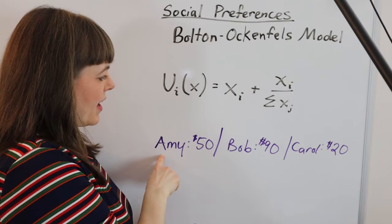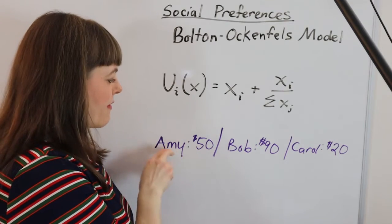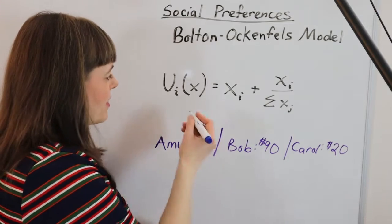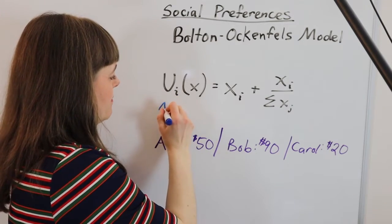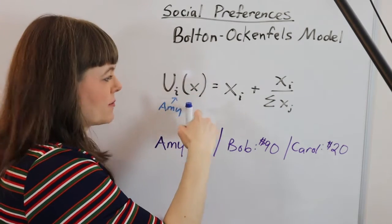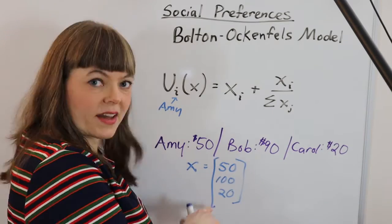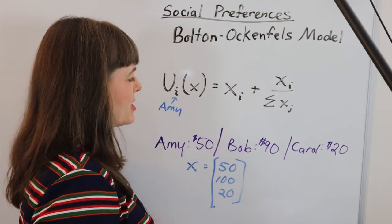So if we have a distribution of resources where Amy has $50, Bob has $90, Carol has $20, we might think of this from Amy's perspective. X is the outcome, so x is a vector of all of the outcomes.